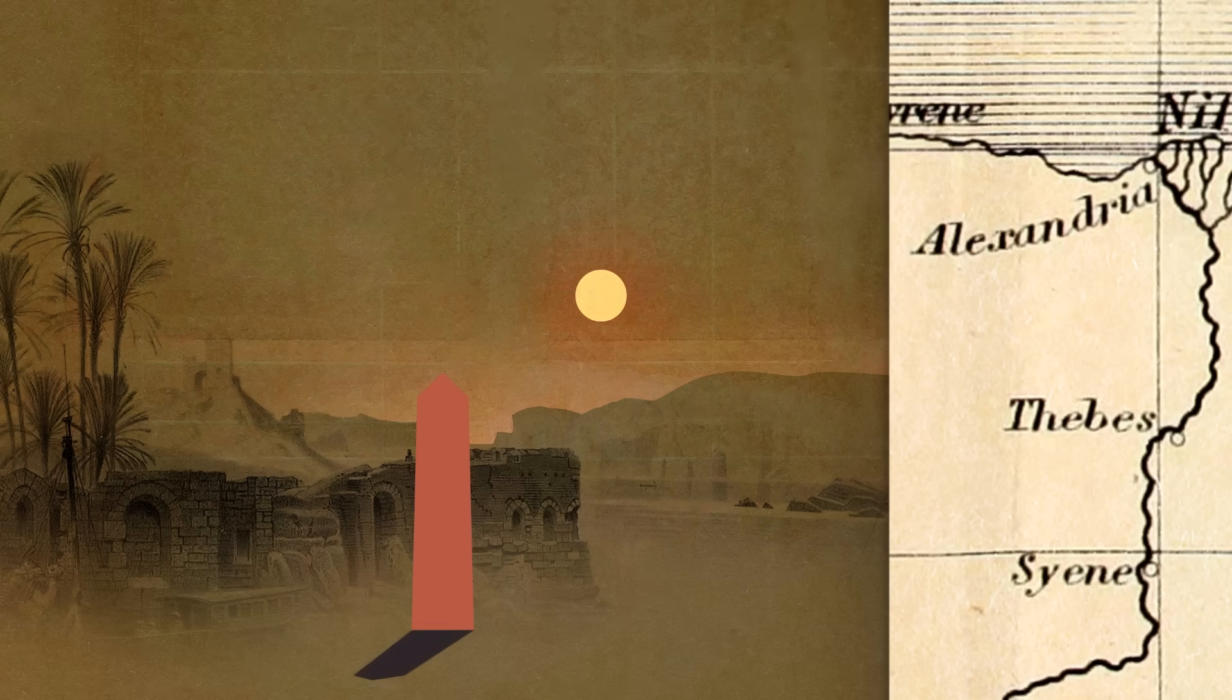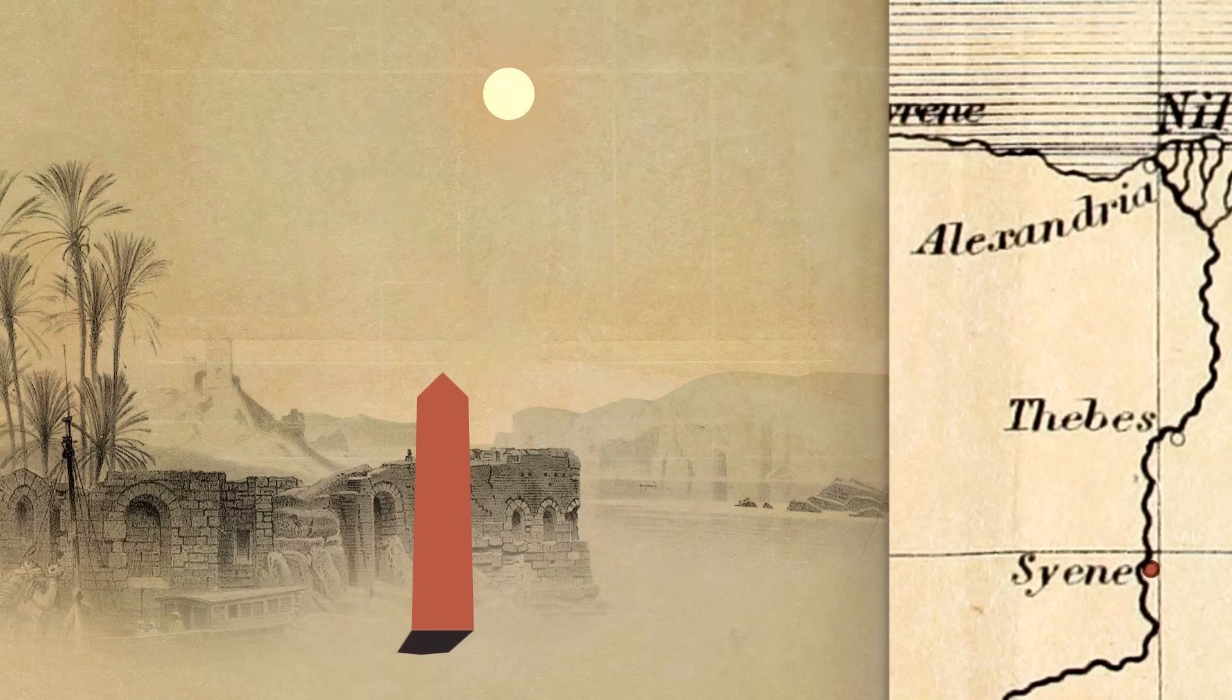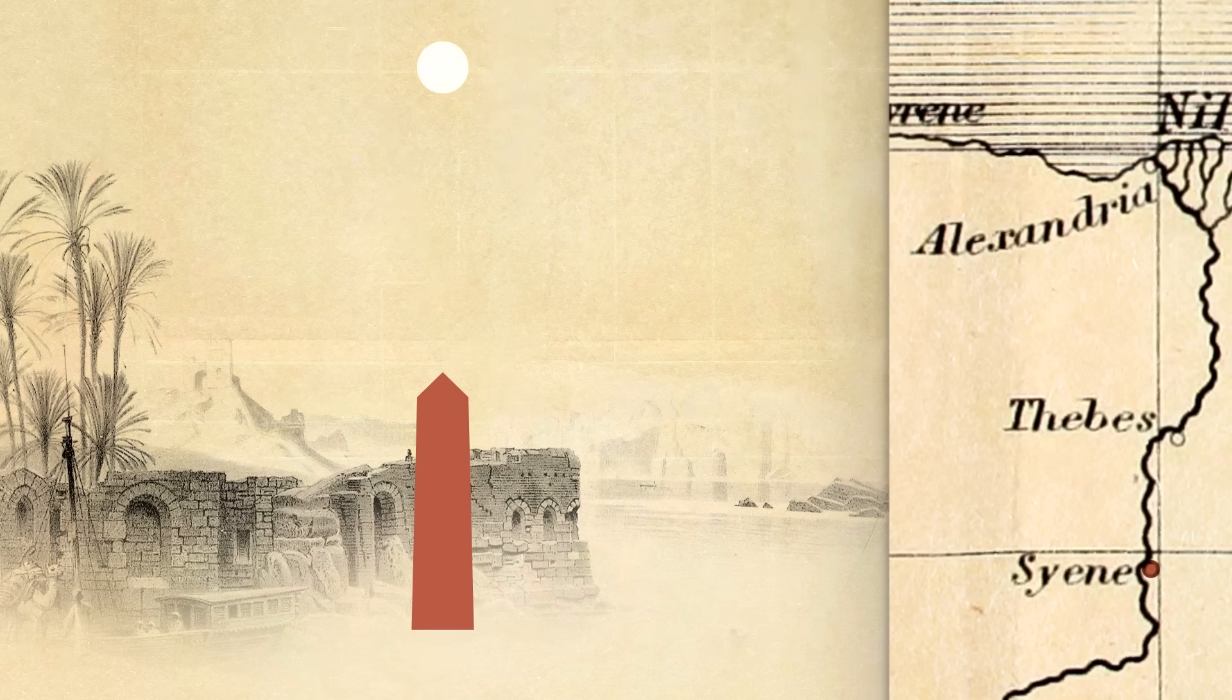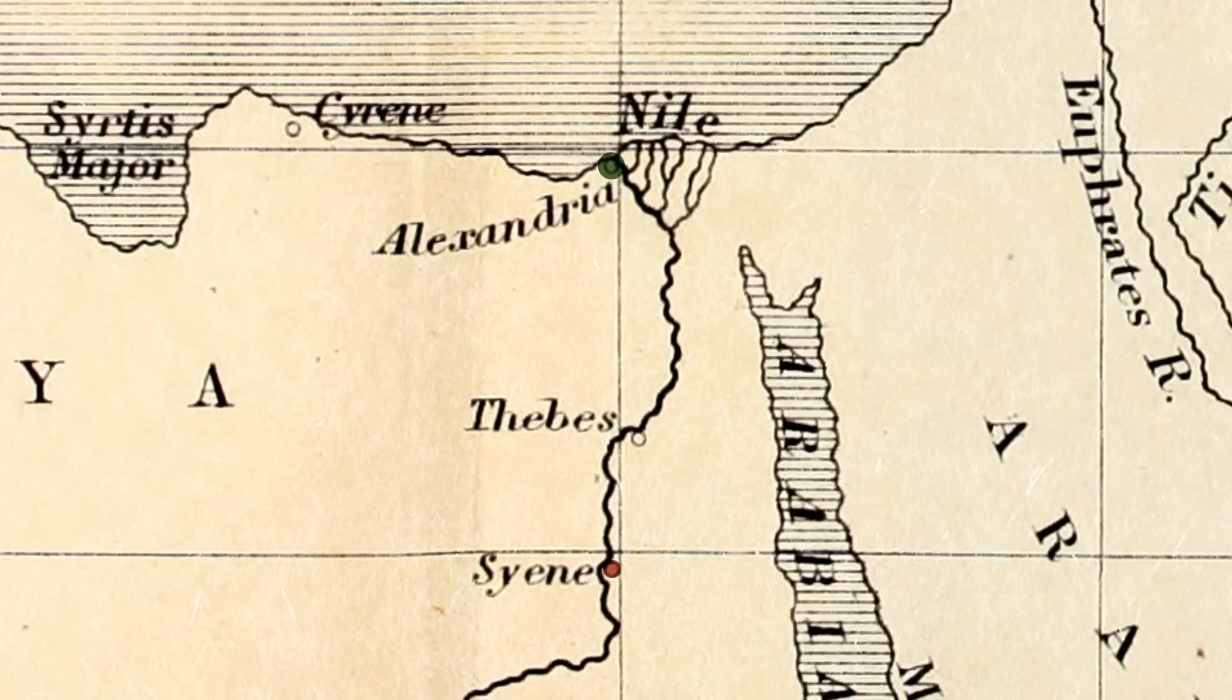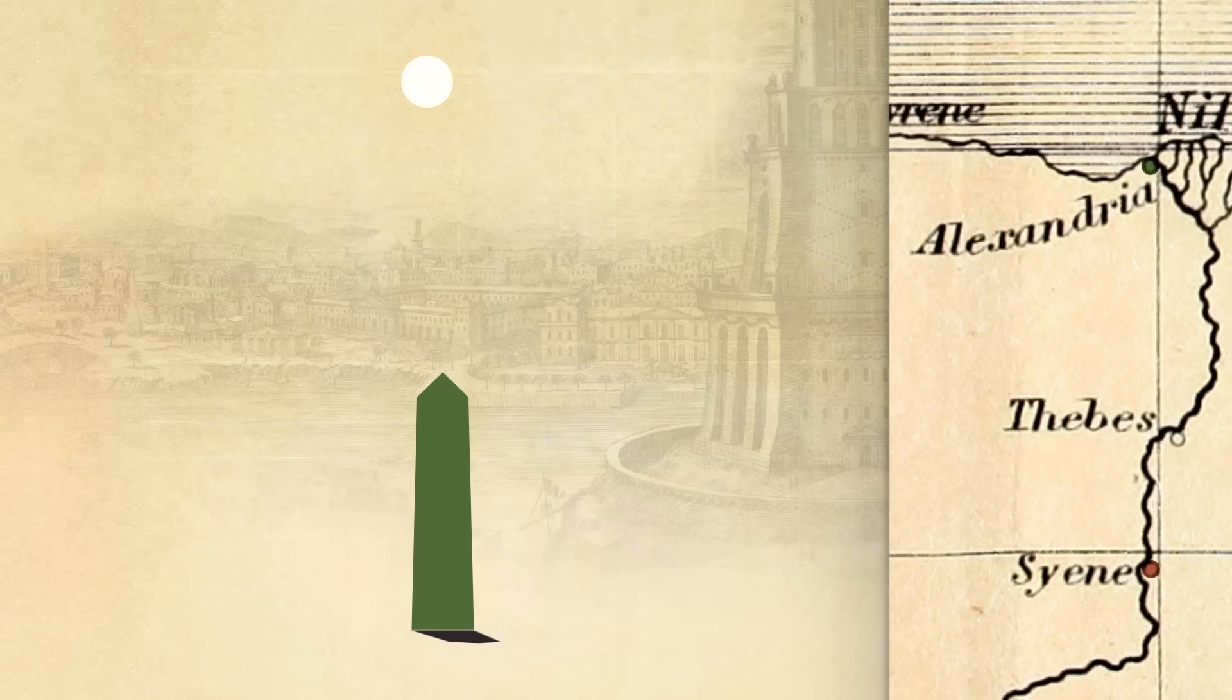He had heard about a city to the south, the city of Cyene, where at noon on the summer solstice, there were no shadows because the sun was directly overhead. But at the same moment up in Alexandria, where he was, there was a shadow. This made sense if the Earth was curved and the sun was very far away. The rays would come in practically parallel. And so when they lined up with an obelisk in Cyene, it would be off in Alexandria. Now here comes the key insight. If you have a line slicing through two parallel lines, this angle is the same as this angle. That's just always true.